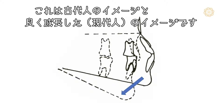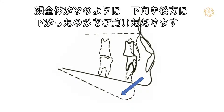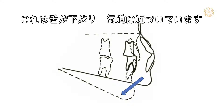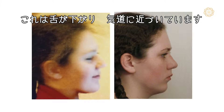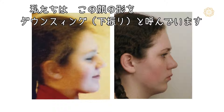Here we have an image of an ancient man set against an image of a good grower, and you can see how the whole facial form seems to have dropped down and back, carrying the tongue down back towards the airway. This is what we refer to as a downswing in facial form.